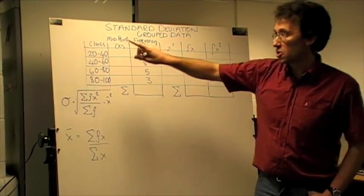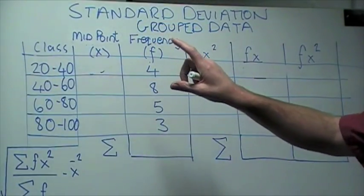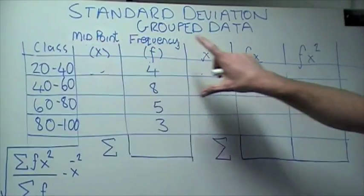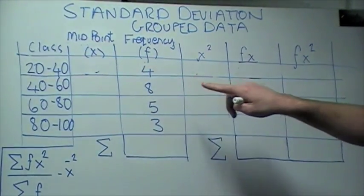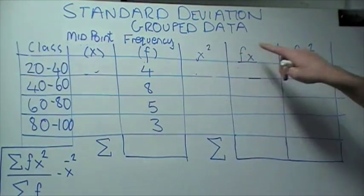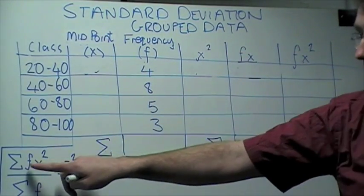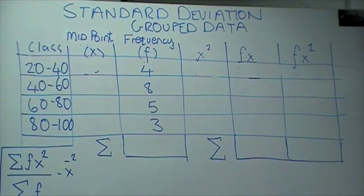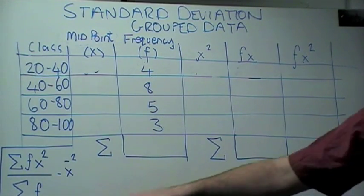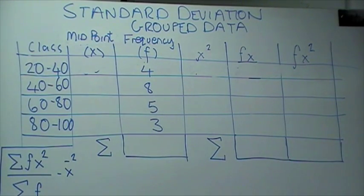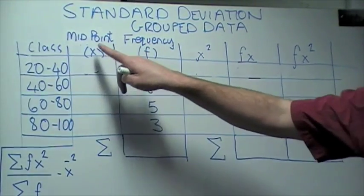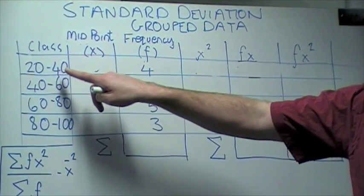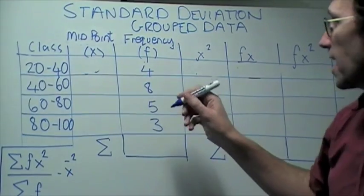So let's do that for this question here. What we need to do now is create a table with the data that we've been given with columns and headings that will help us populate this table so we can calculate the standard deviation and the mean. So the first thing we have to do is find the midpoint. The midpoint of this class here between 20 and 40 is 30.